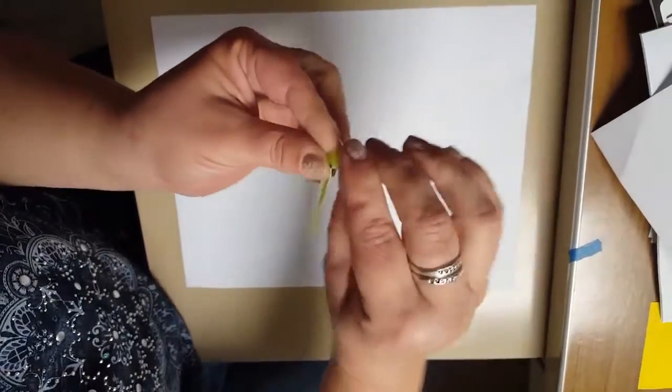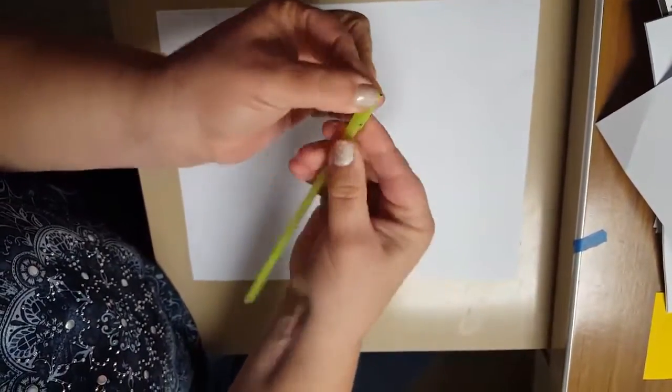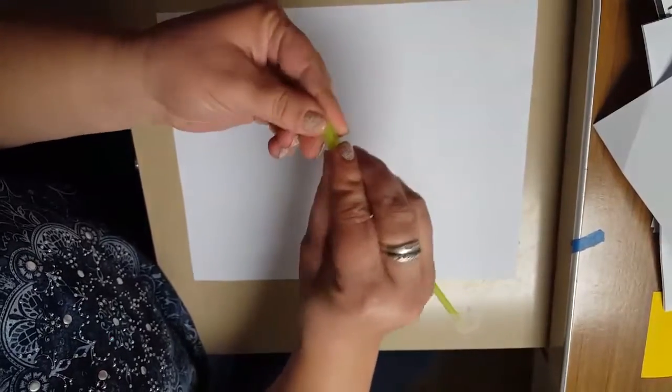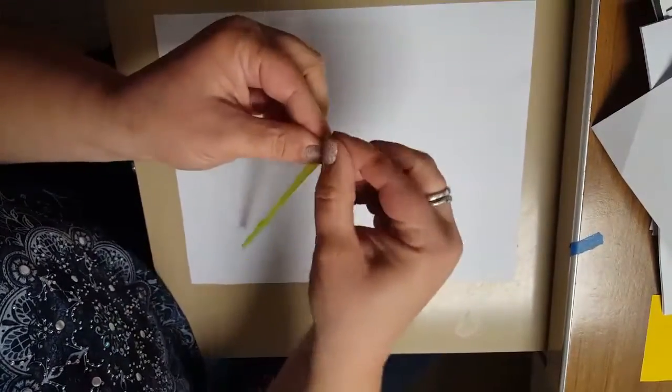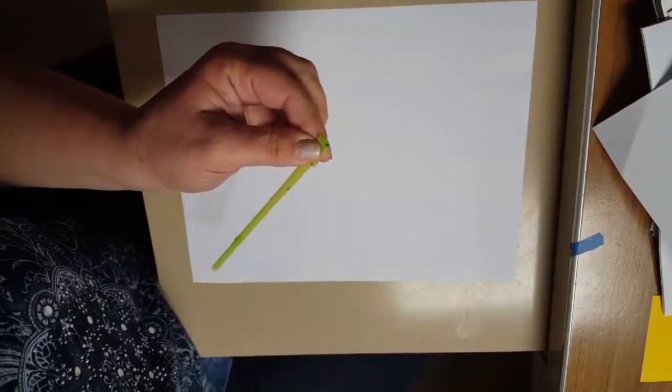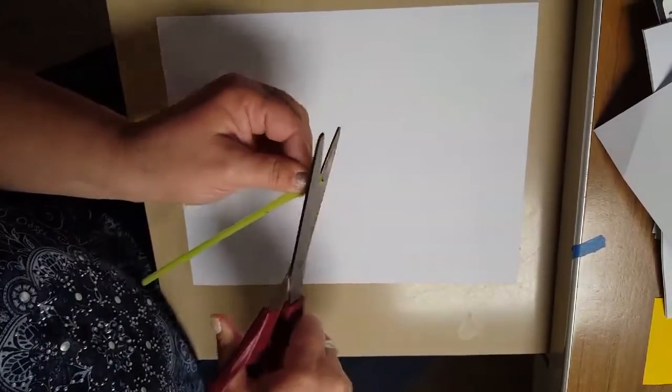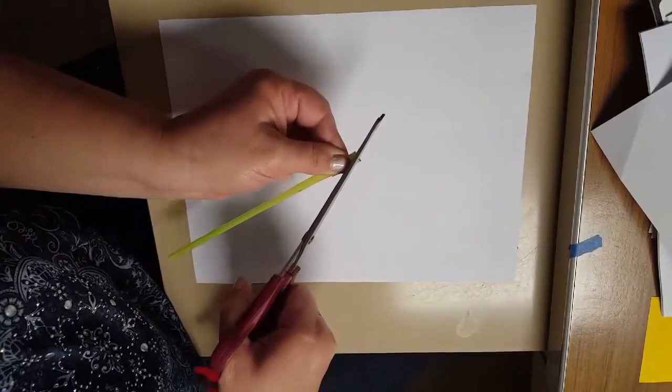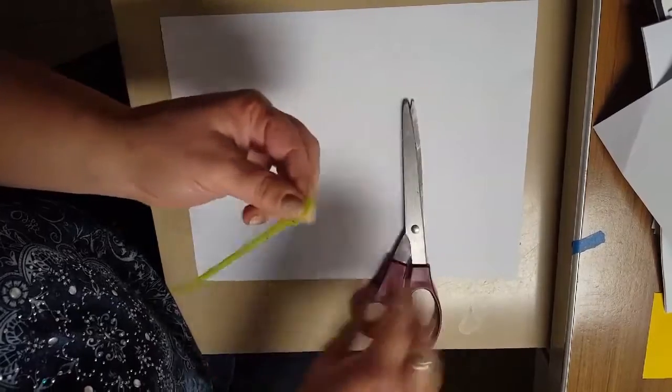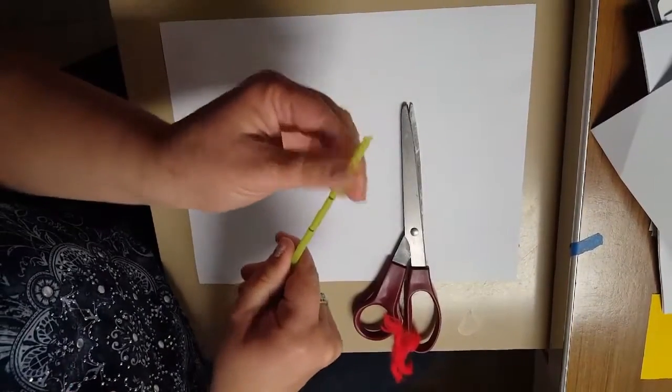Then when you pinch it and fold it at the marking, make sure that it's lined up, that it's nice and straight, and then you're just going to cut off the little corner edge and it's going to kind of shoot off, but make sure you don't cut the straw all the way in half and you make a little hole in the straw.